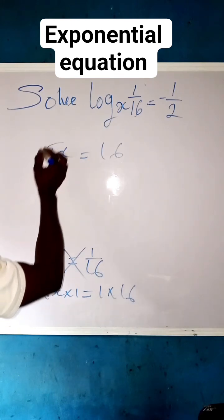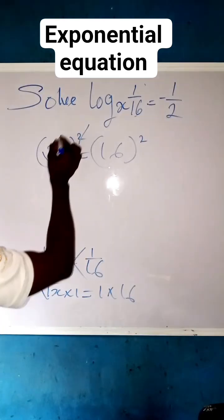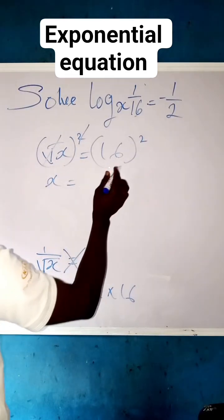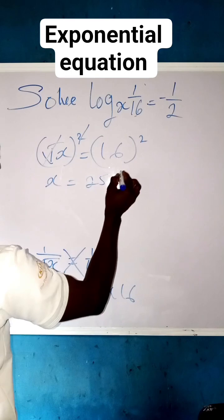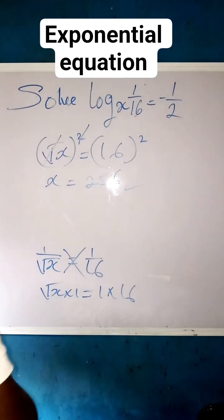So what we use to get rid of root is square. Square the root side, so that square cancels square root. x is now equals to square of 16, which is 256. And this is our final answer.